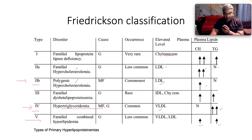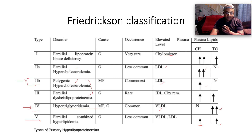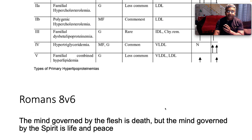Just remember the commonest types: type 2b, which is polygenic hypercholesterolemia targeting LDL, and the next most common is type 4, hypertriglyceridemia, which implicates VLDL.